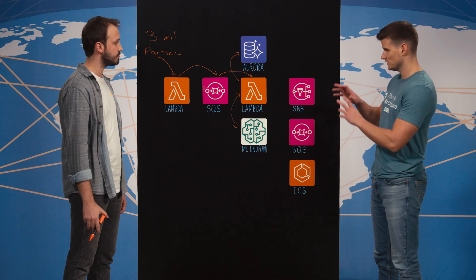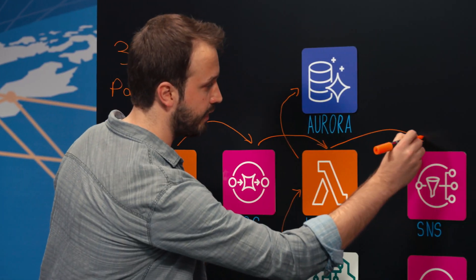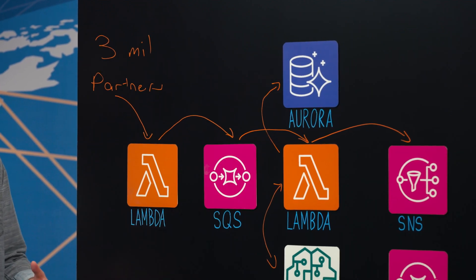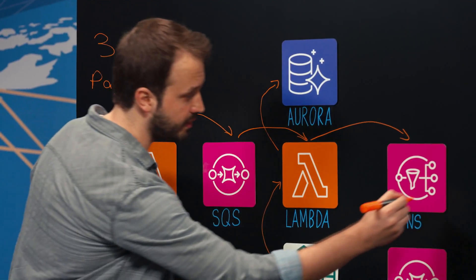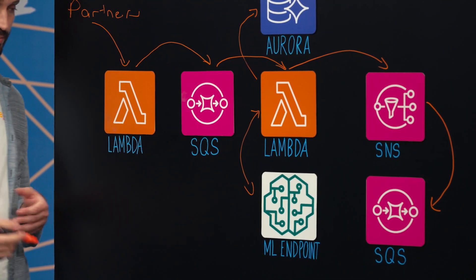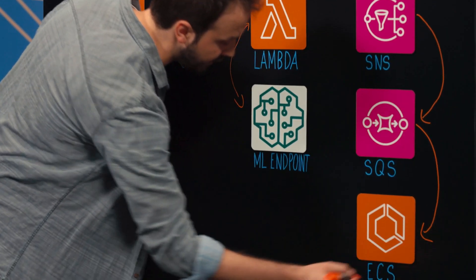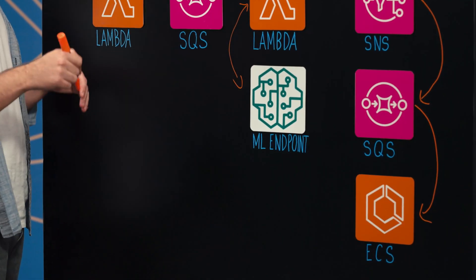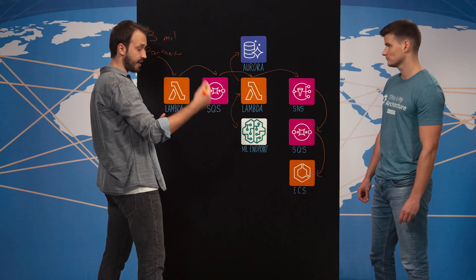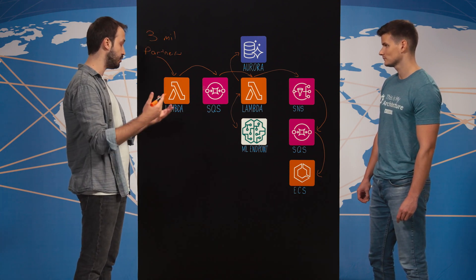Okay, and how does this data get to the talent platform? Yeah, we push a notification to an SNS topic after we process and enrich the data. The SNS topic fans out the data into multiple SQS queues, and those queues are consumed by containers that we created inside the talent platform. They add the data to the talent platform database to make it available for customer users.